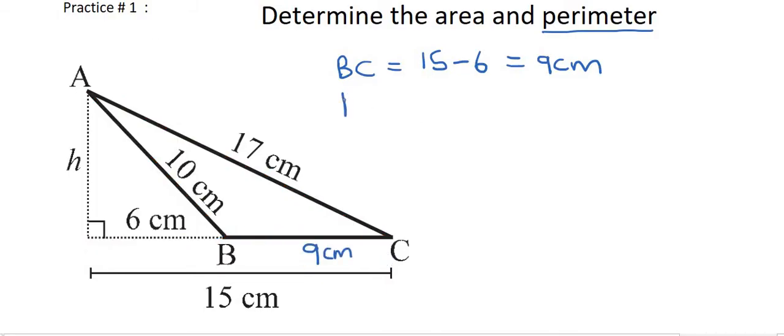And so we could easily work out the perimeter of the shape because that's just going to be 17 plus 10 plus 9. And that would give us 36 centimeters.